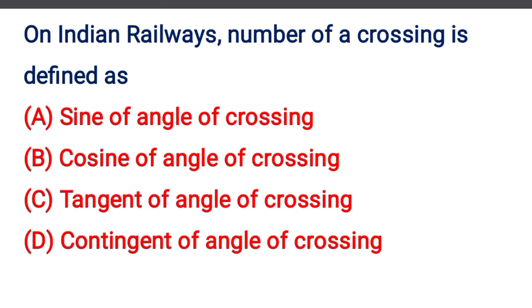Next question: On any railway, number of crossing is defined as — Option A: sine of the angle of crossing, Option B: cosine of the angle of crossing, Option C: tangent of the angle of crossing, Option D: cotangent of the angle of crossing.